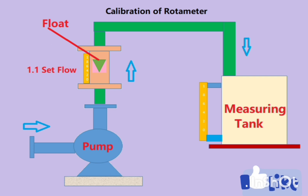Suppose we want to calibrate this rotameter for four liters per hour flow. We start the pump, set the float at the four liter per hour mark, and begin collecting liquid in the measuring tank. After one hour, we stop the pump and check the collected volume. If it is four liters, the rotameter is 100% accurate. If it is higher or lower, the rotameter is showing error. This is a very simple manual calibration setup.